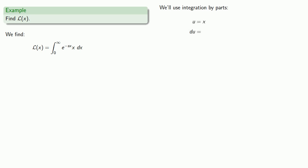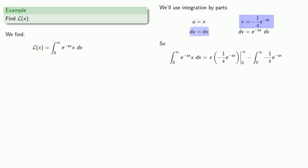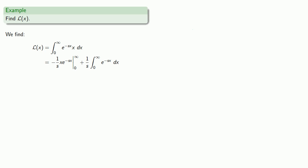So we'll let u equals x, and let dv equal e to the power minus sx dx, and we'll differentiate u and anti-differentiate dv. Our anti-derivative is going to be u times v minus the integral of v du. And this is still an improper integral, so we'll include those limits of integration.